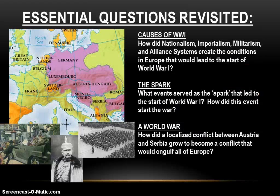Alright, guys, so we saw that World War I began because of those four causes. Nationalism, imperialism, militarism, and the alliance systems created the conditions that started the war. We saw that the assassination of Archduke Franz Ferdinand by Slavic nationalists created the spark that set the whole thing off, and those alliance systems pulled everybody into the conflict, creating a larger European war. So those are the essential questions — that's what we covered today. Be ready to talk about that the next time we meet, and as always, until that time, I bid you farewell.